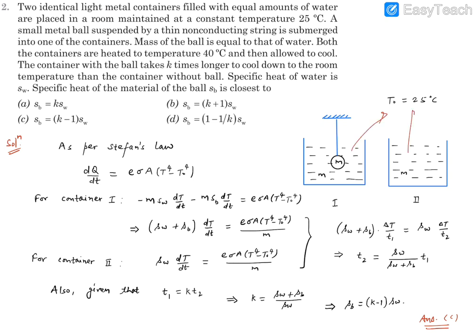For cooling we can use Stefan's law or Newton's law of cooling. As per Stefan's law, the rate at which heat is being lost is given by dQ/dt = e*sigma*A*(T^4 - T0^4).